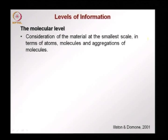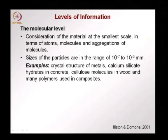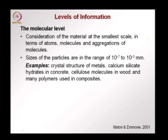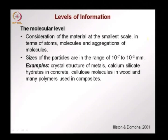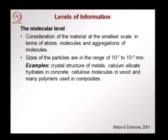At the molecular level, we consider the material at the smallest scale — atoms, molecules, and clusters of molecules — in the range of 10⁻⁷ to 10⁻³ millimeters. To understand the structure at this scale we need a microscope and the science. Examples include the crystal structure of metals; in concrete, the calcium silicate hydrate gel particles which are a few hundred nanometers in size; in wood and timber, the cellulose molecules making up the fibers; and in composites, the polymer chains.